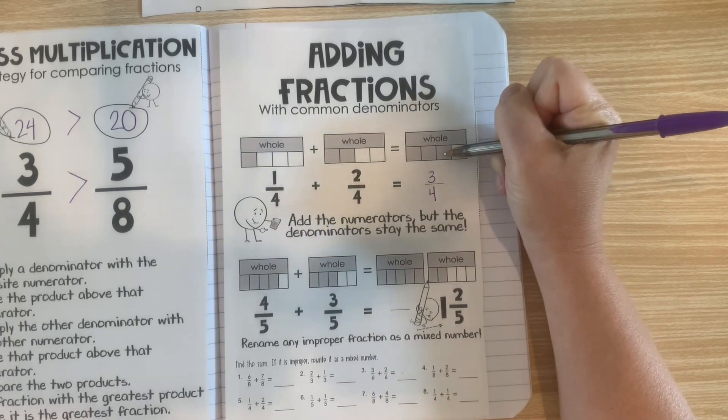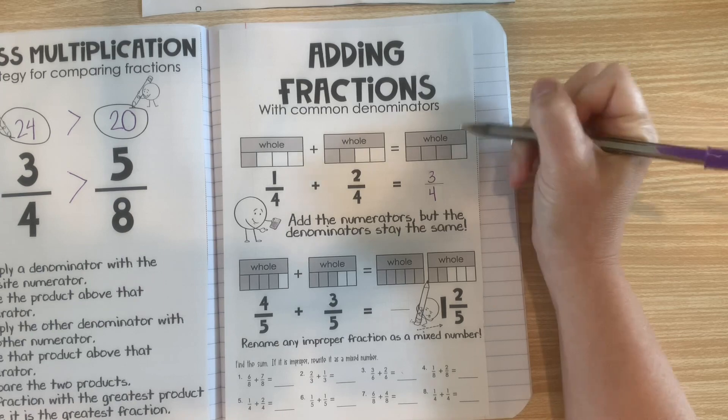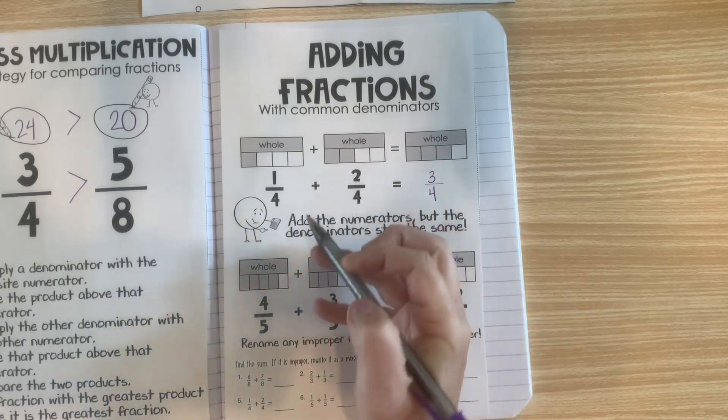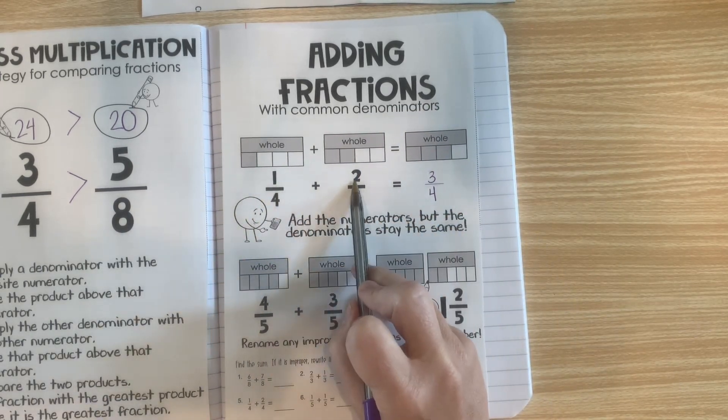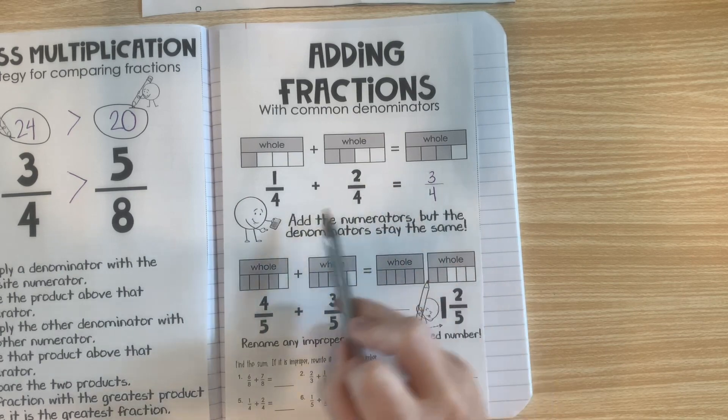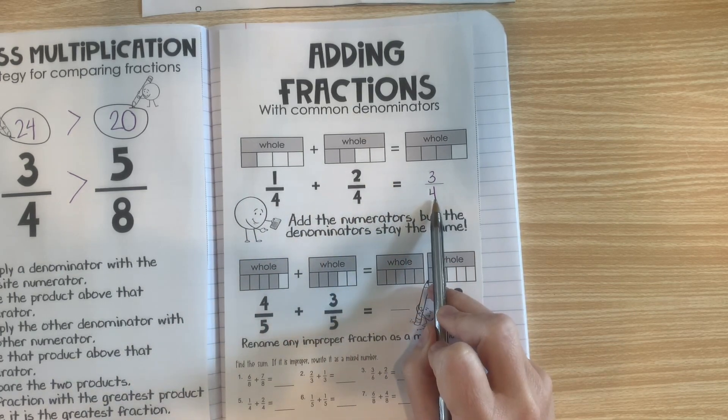And that's because there are still 4 pieces in the whole. When we're adding fractions, we just have to add the numerators and remember that the denominator stays the same.